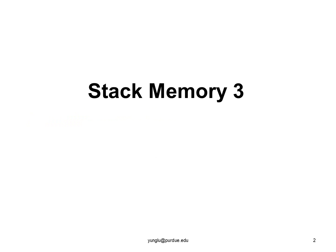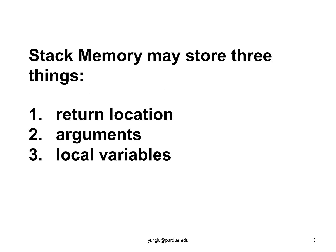Welcome to the third lecture about stack memory. First, let us review what we have learned so far. The stack memory can have three things. The first is the return location, the line number after the function call. Each function call has one and only one return location. The second is arguments, the input to the function. The third is the local variable or variables.